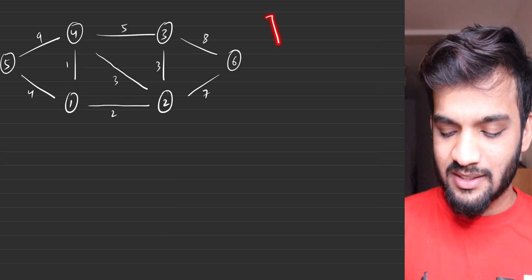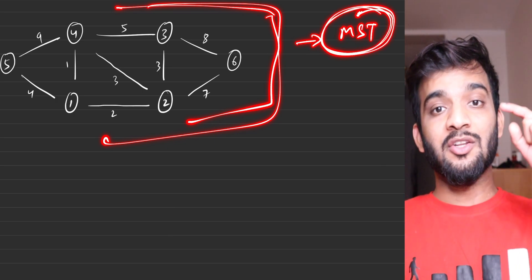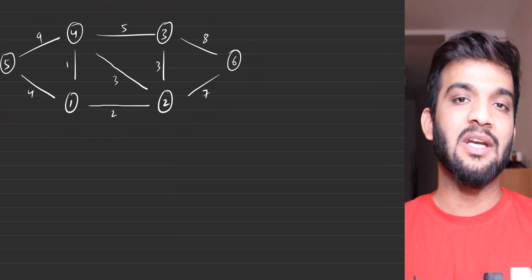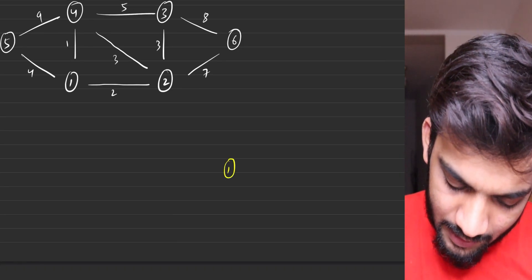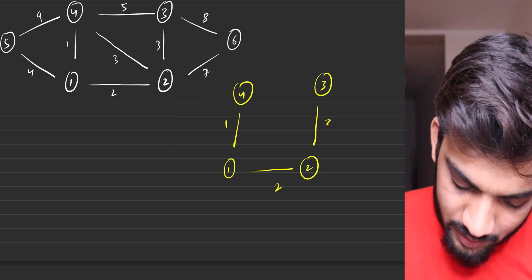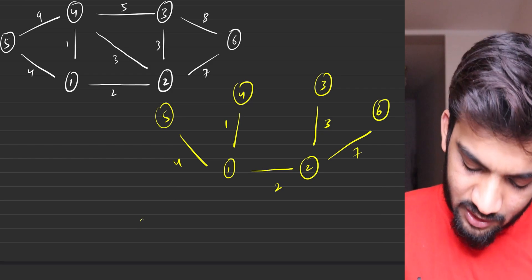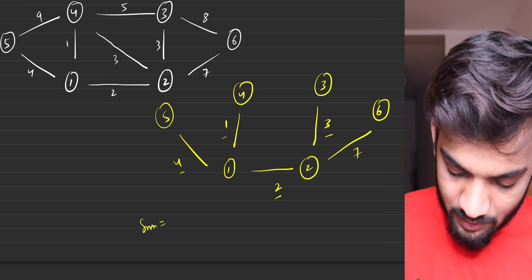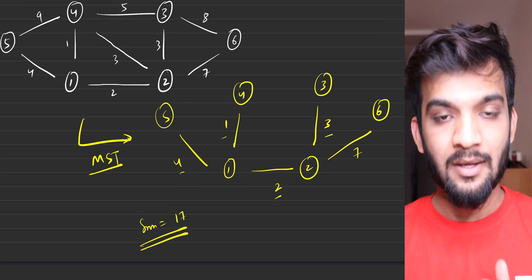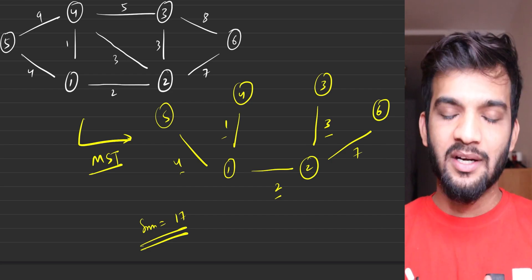Now a small task: given a new graph, try drawing its MST. Pause the video, draw it, then check. For this graph, starting from node 1 and connecting 4, 2, 3, 5, and 6 with edge weights 4, 1, 2, 3, 4, and 7 respectively, the MST sum comes out to be 17. If you got the same answer, great — if not, don't worry, it will get clearer with more examples.